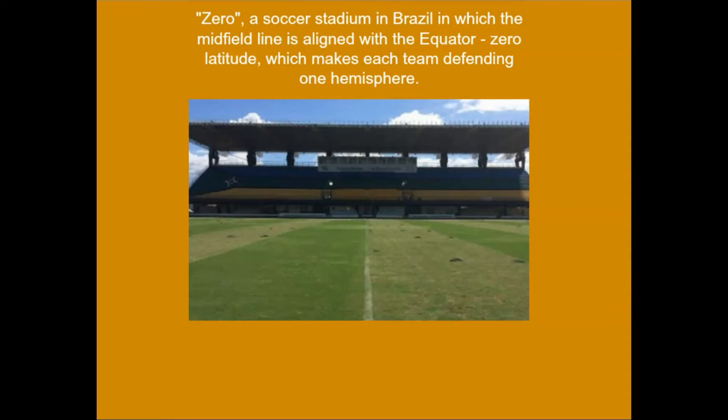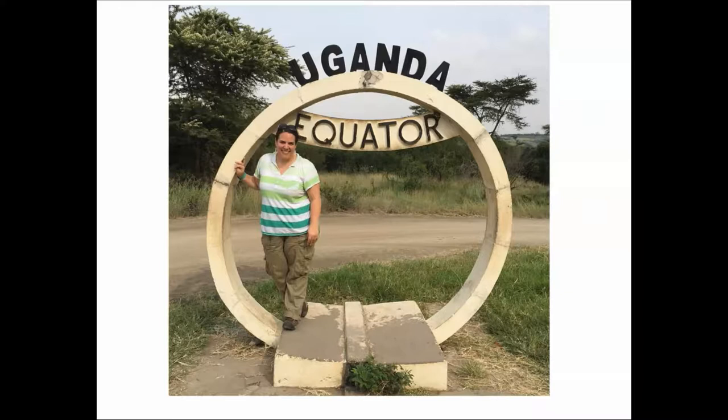Well, fun factoid here that zero, a soccer stadium in Brazil, or probably would call a football field, in which the midfield line is aligned with the equator, zero latitude, which makes one team each defending one hemisphere. So kind of fun pitch where the midline is the equator.